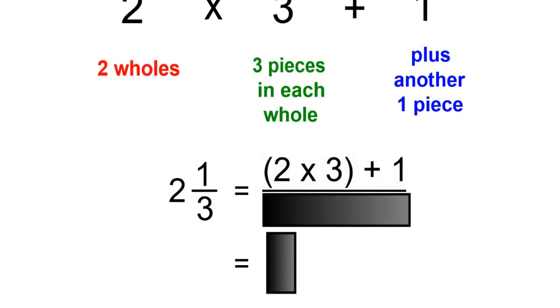So this will be written as 2 times the 3 plus 1 over the denominator of 3.